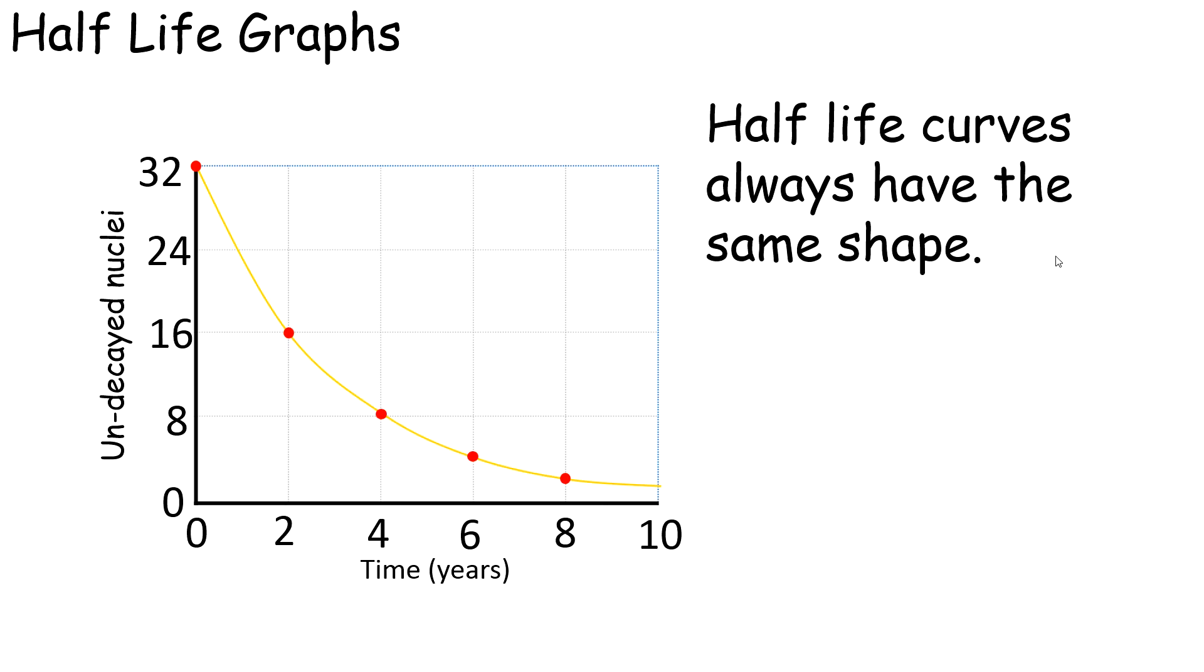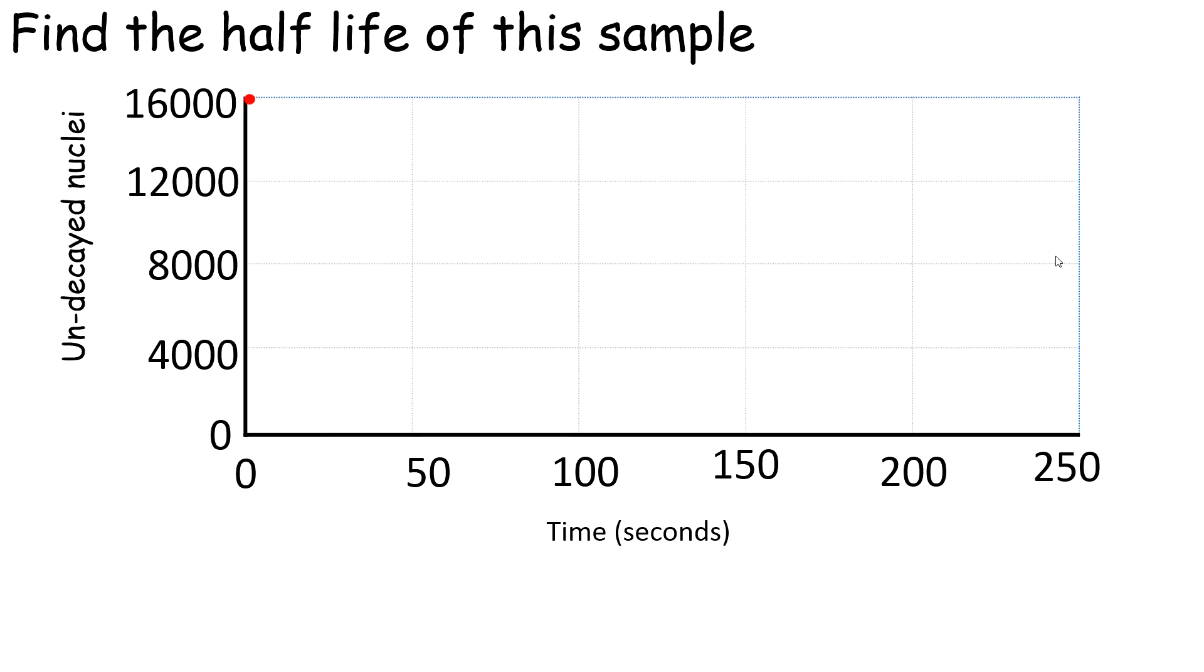So what that's really saying is theoretically you will never get to a point where all of your undecayed nuclei at the start will decay. Actually in practice you do get to zero, and once you've only got one undecayed nucleus left, then that nucleus will either decay or not. So if it decays it drops to zero, and if it doesn't it stays at one.